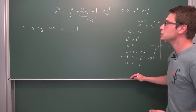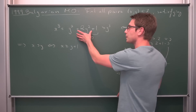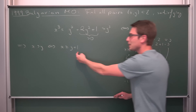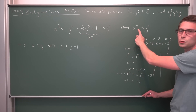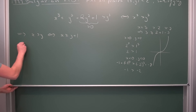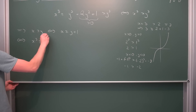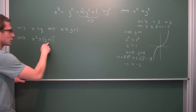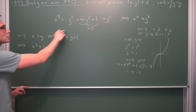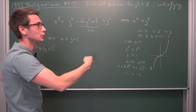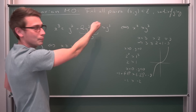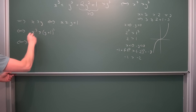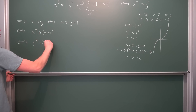Now we can go back and bring this into the form y plus 1 cubed. Going backwards and cubing both sides, this is equivalent to saying x cubed is greater than or equal to (y plus 1) cubed. And we know what x cubed is from the original equation: y cubed plus 2y squared plus 1. So we get y cubed plus 2y squared plus 1 is greater than or equal to (y plus 1) cubed.